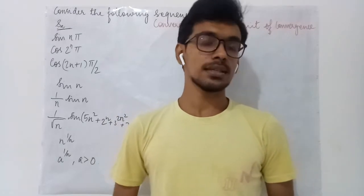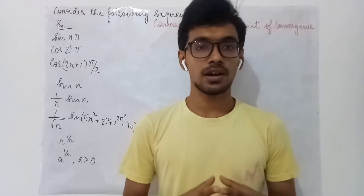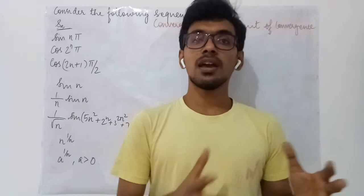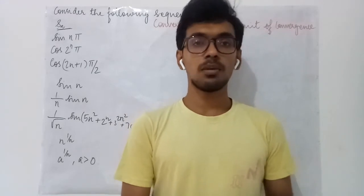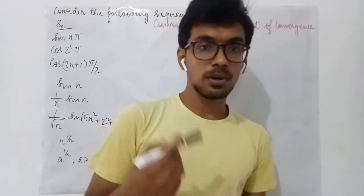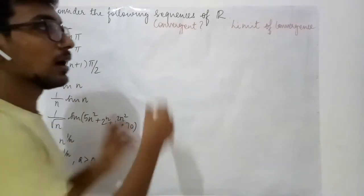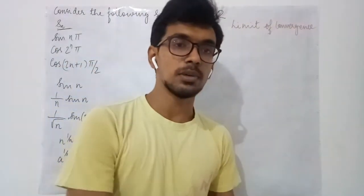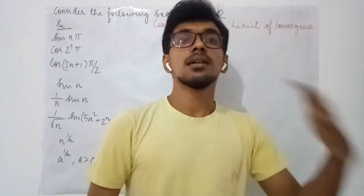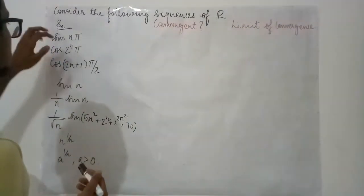Welcome to a course on sequences and series. In the previous lectures we have seen the definition of a convergent sequence, limit of a sequence, and divergent sequence, and worked out some problems. In this lecture we are going to continue problems on sequences to find out whether a given sequence is convergent or not, and if it is convergent, what the limit is — and even if it is divergent, in what sense we say it is divergent. The first sequence given is sin(nπ).